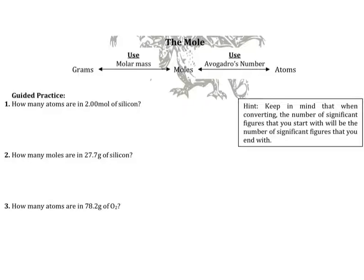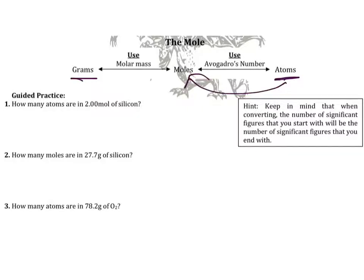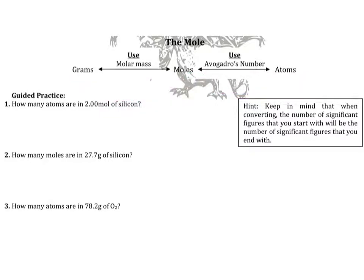If we are given grams, we can take the grams and convert them to moles, and then take the moles and convert them to atoms. That's our flowchart. We can go forward and backward — we can start anywhere and go anywhere. If we're given atoms and asked to go to grams, we first go to moles and then to grams, making it a two-step or two-fraction problem.